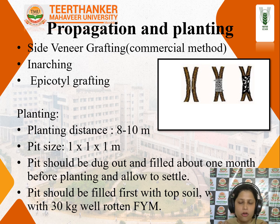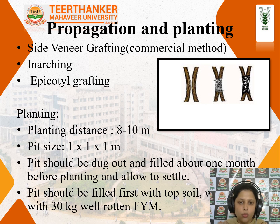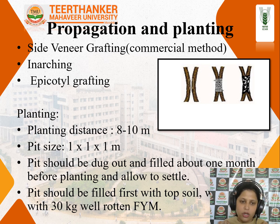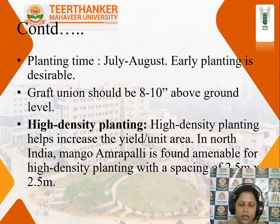Coming to propagation and planting of mango, it can be propagated by side veneer grafting, inarching and epicotyl grafting. However, the commercial method of propagation of mango is veneer grafting. These different types of propagation techniques are performed in different regions of India, whichever is successful in that particular region. Planting distance of around 8 to 10 meters is kept between the trees. Before planting, we dig a pit of size 1 meter x 1 meter x 1 meter. The pit should be dug out and filled about 1 month before planting and allowed to settle. Pit should be filled first with top soil followed by the lower soil along with 30 kg of well-rotten FYM. The suitable planting time for mango is July to August. While planting, graft union should be around 8 to 10 inches above the ground level so that it does not directly come in contact with the soil surface.